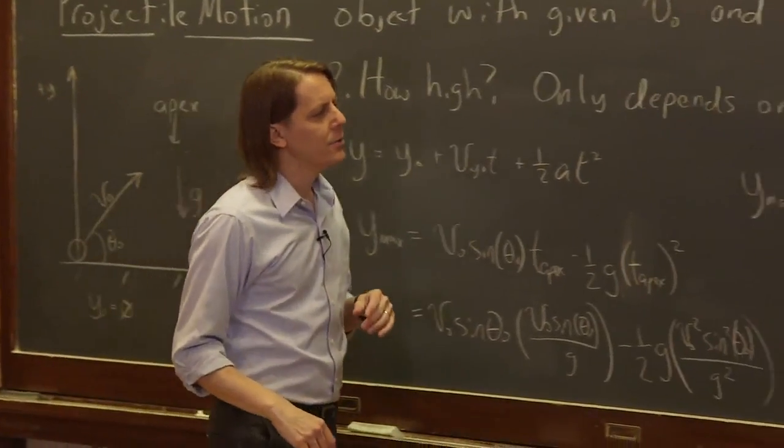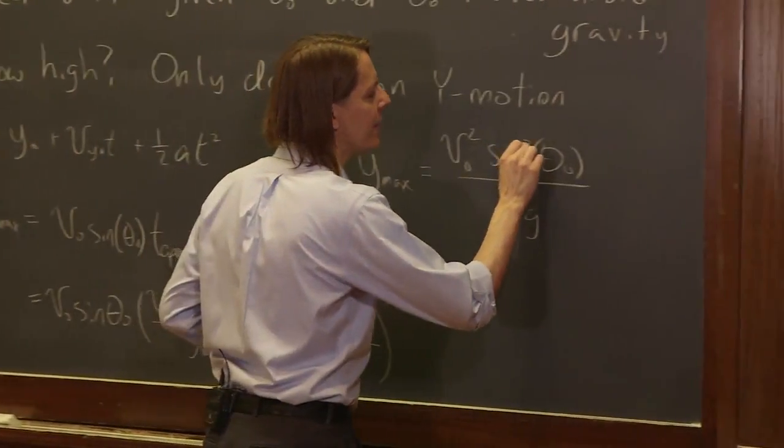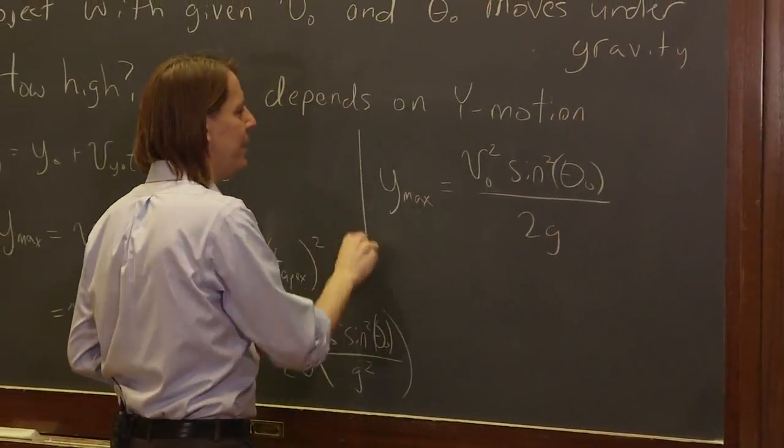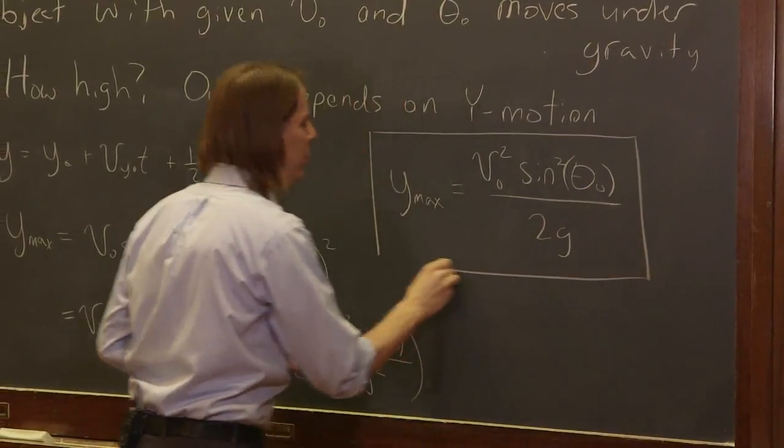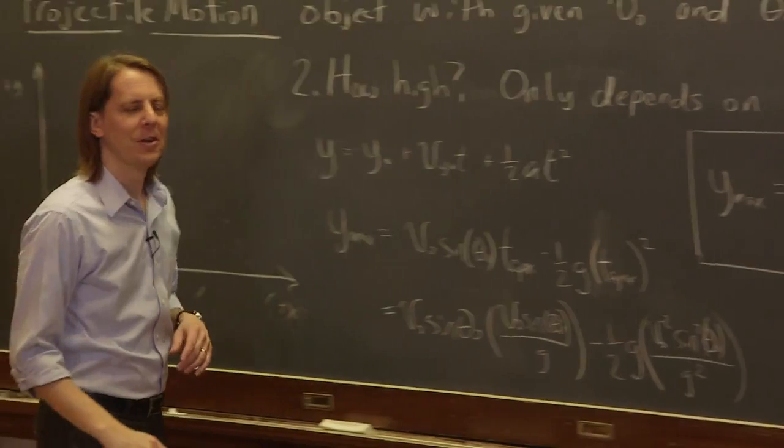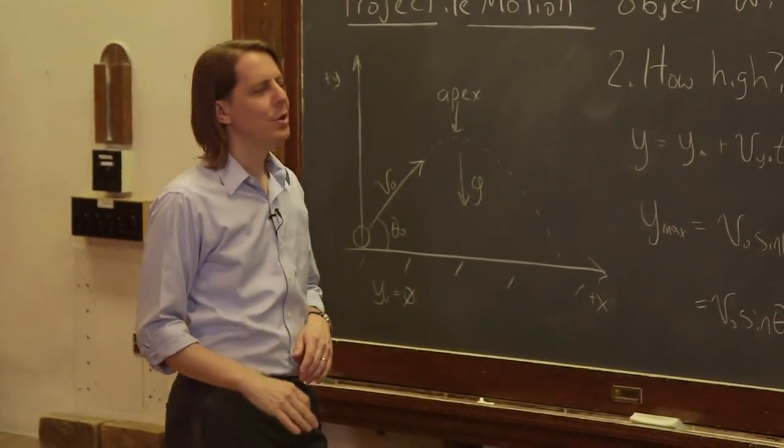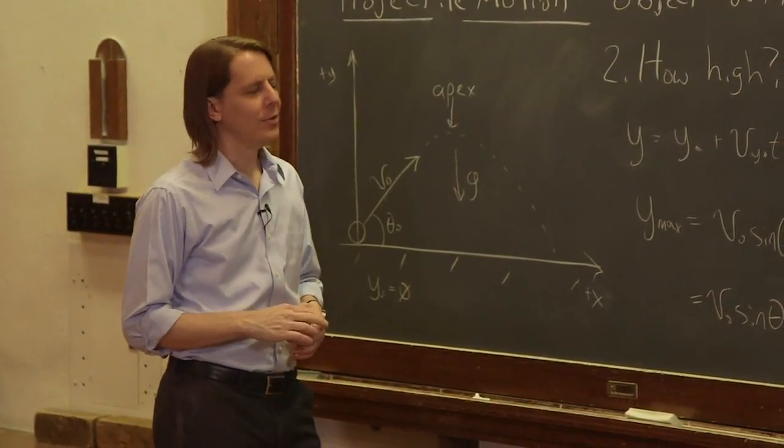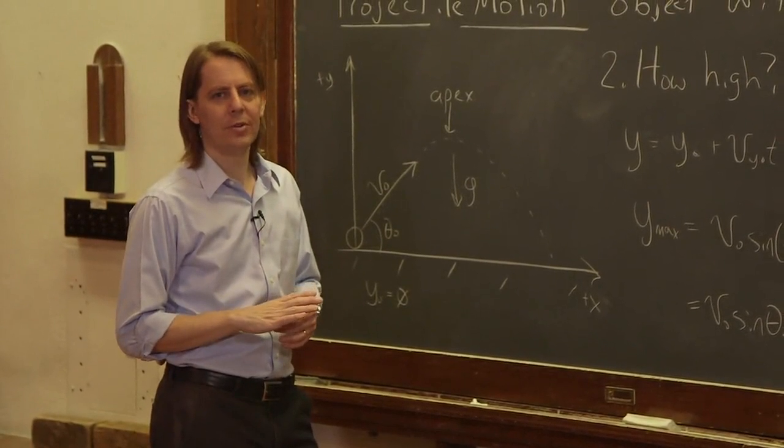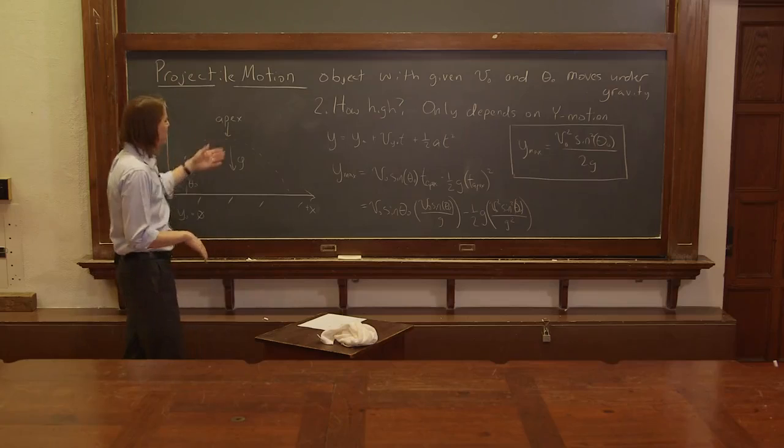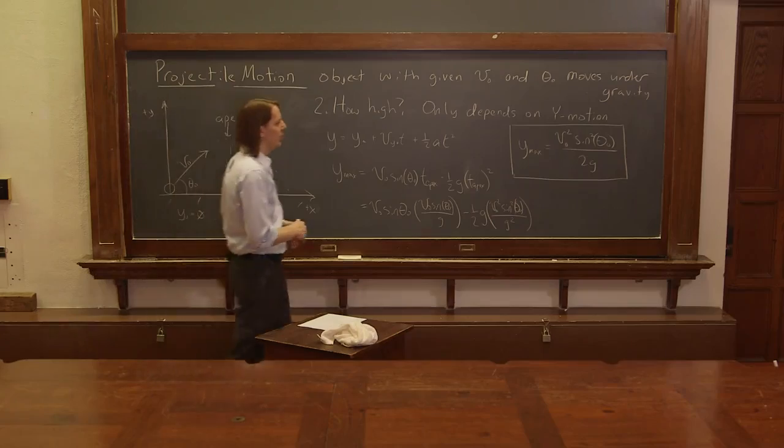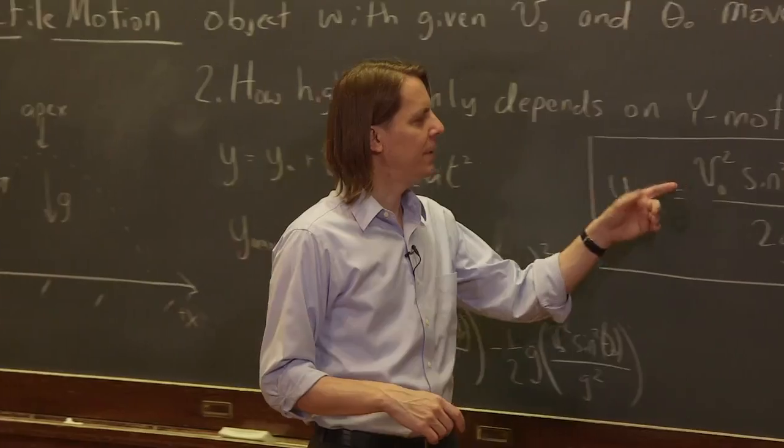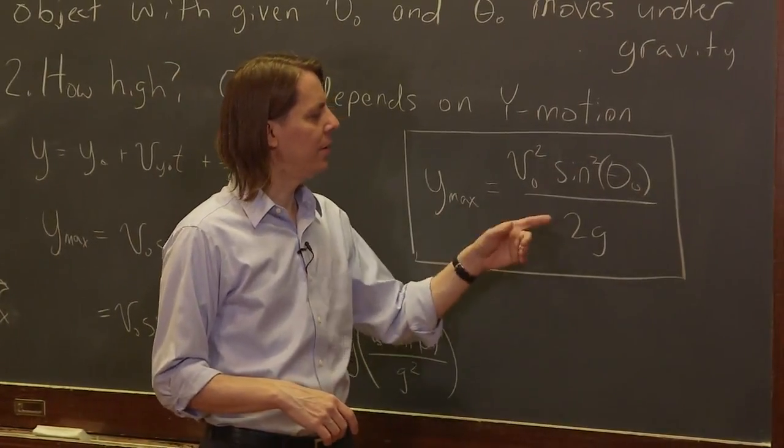We now understand that and we derived it based on kinematics, but sometimes you've got to decide when you're going to memorize an equation and when you're going to be able to re-derive it. We want you to always be able to re-derive it, but sometimes there's a few equations that are worth memorizing. The maximum height of a projectile is one of those times. It's always v naught squared sine squared theta naught over 2g.